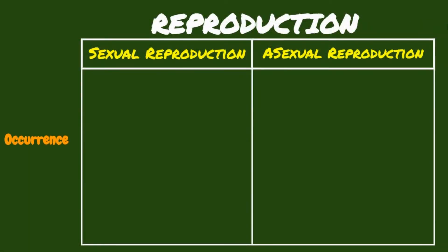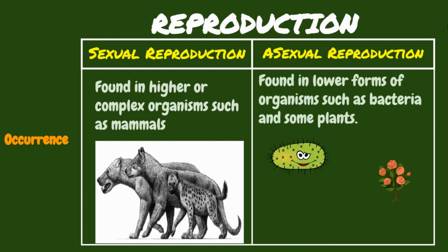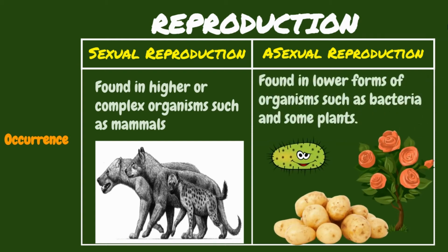Sexual reproduction is commonly found in higher or more complex organisms, such as mammals. On the other hand, asexual reproduction is commonly found in lower forms of organisms, such as bacteria, and in some plants.